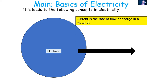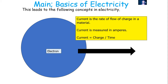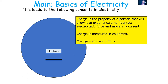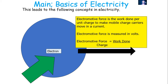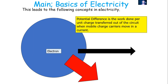To recap: current is the rate of flow of charge, measured in amperes, and is given by I = ΔQ/Δt. Charge is the property of a particle allowing it to experience a non-contact electrostatic force; it is measured in Coulombs, and ΔQ = I × Δt. The EMF is the work done per unit charge to make mobile charge carriers move in a current, measured in volts: EMF = W/Q, or ΔW/ΔQ. The potential difference is the work done per unit charge to transfer energy out of the circuit.